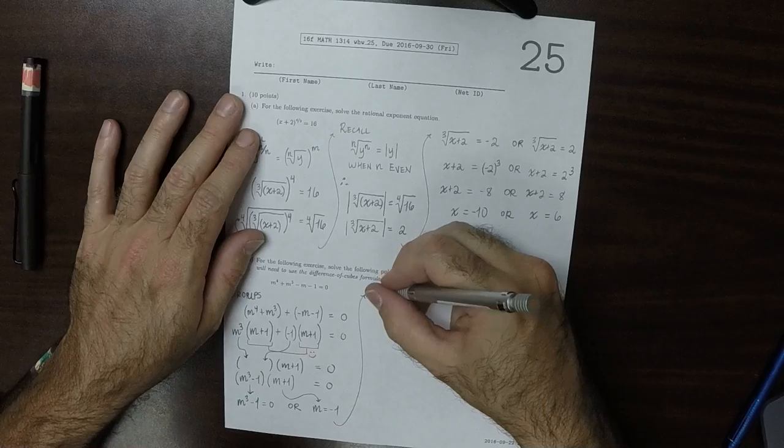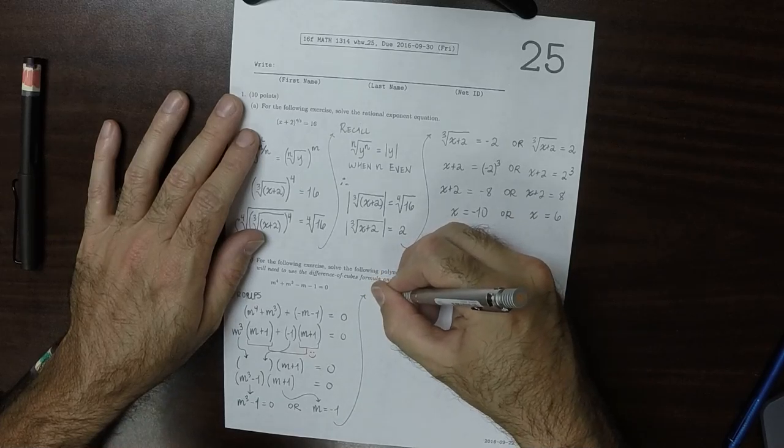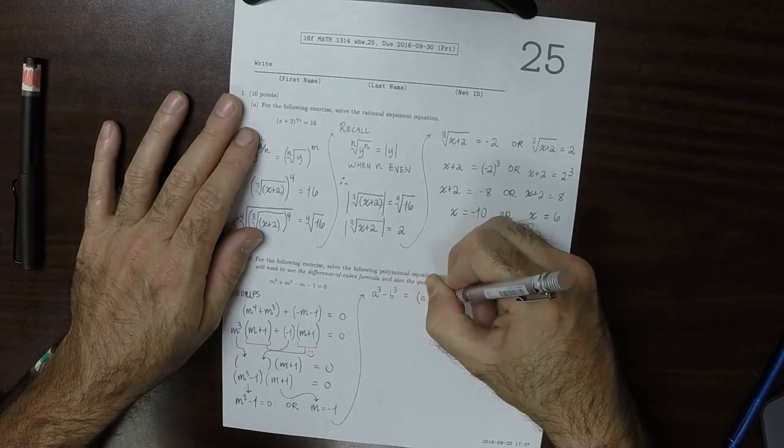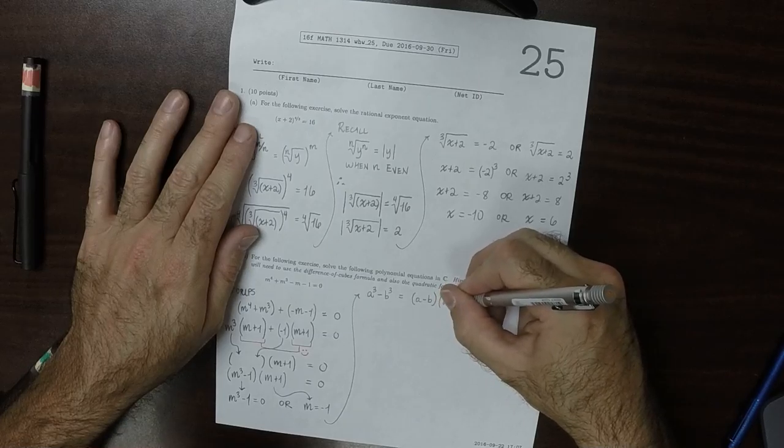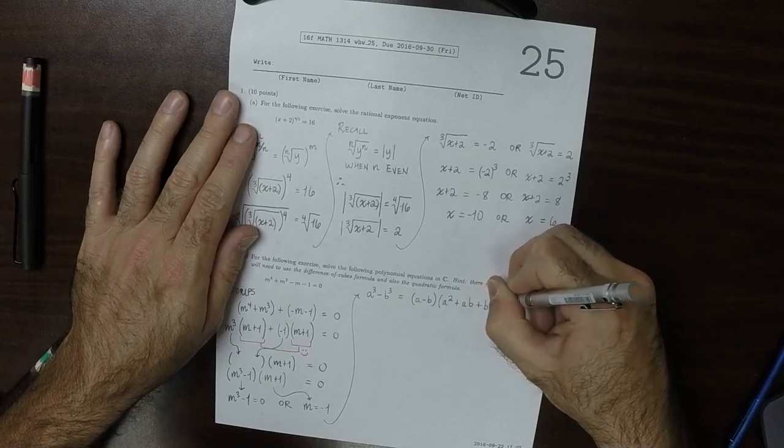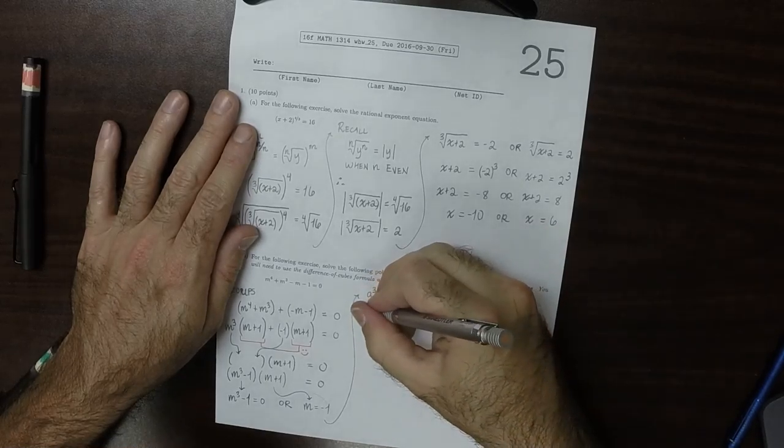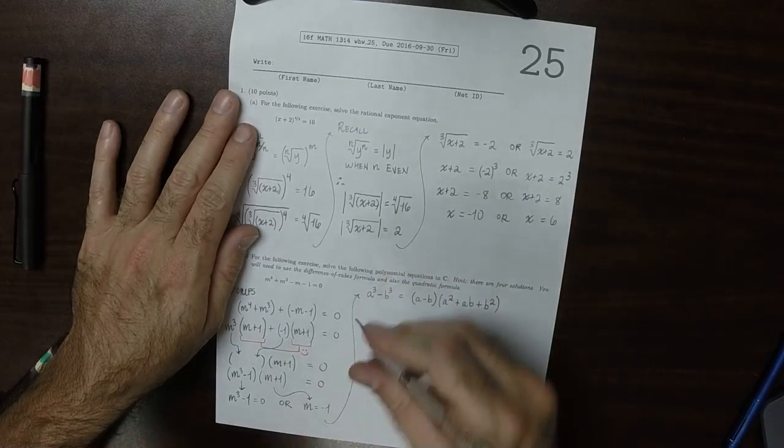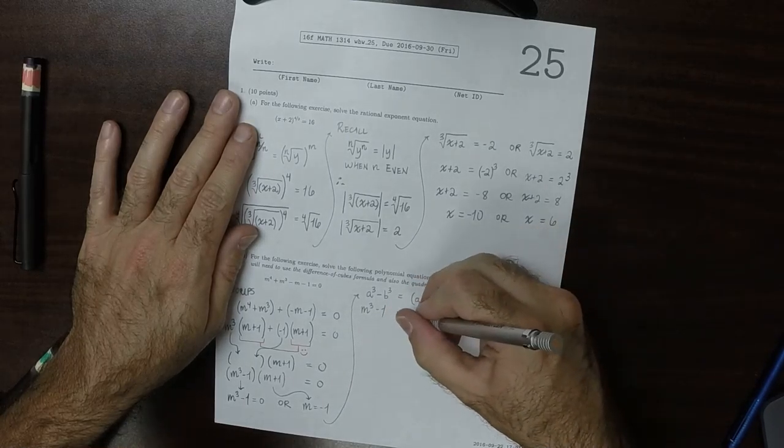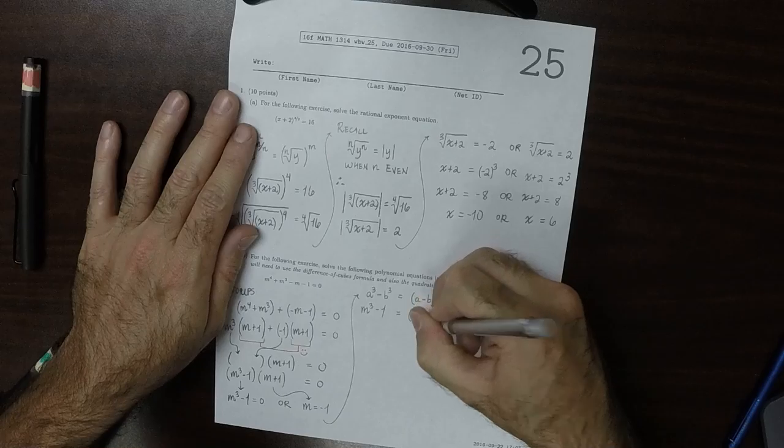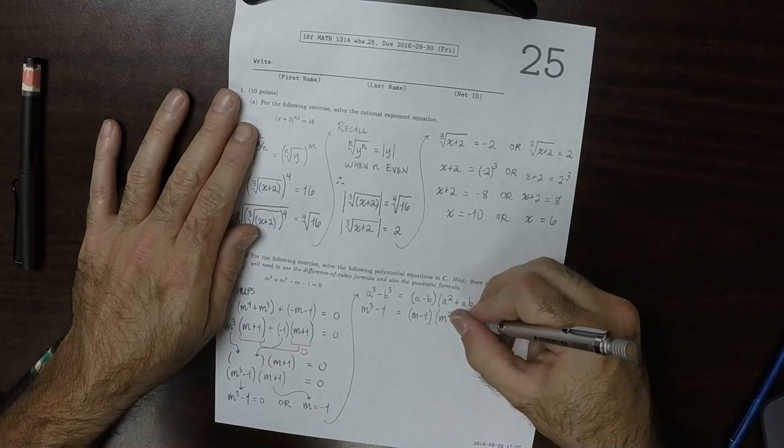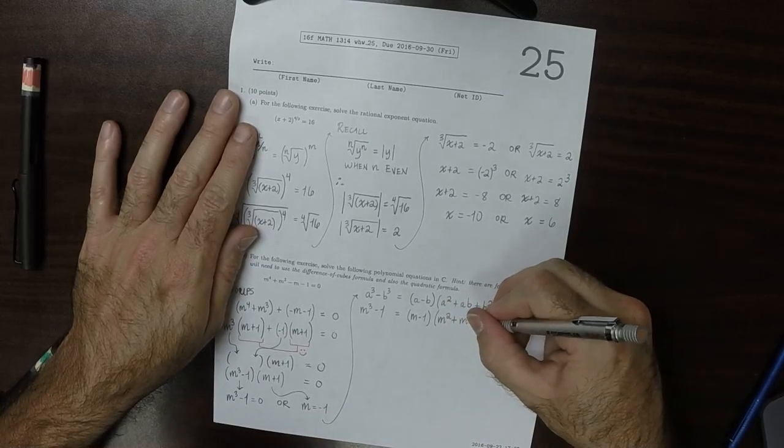The difference of cubes formula. Recall that a cubed minus b cubed is a minus b multiplied by a squared plus ab plus b squared. So that's the difference of cubes formula. And as a result, applying it to this, m cubed minus 1 is m minus 1 multiplied by m squared plus m times 1, so m, and then plus 1.